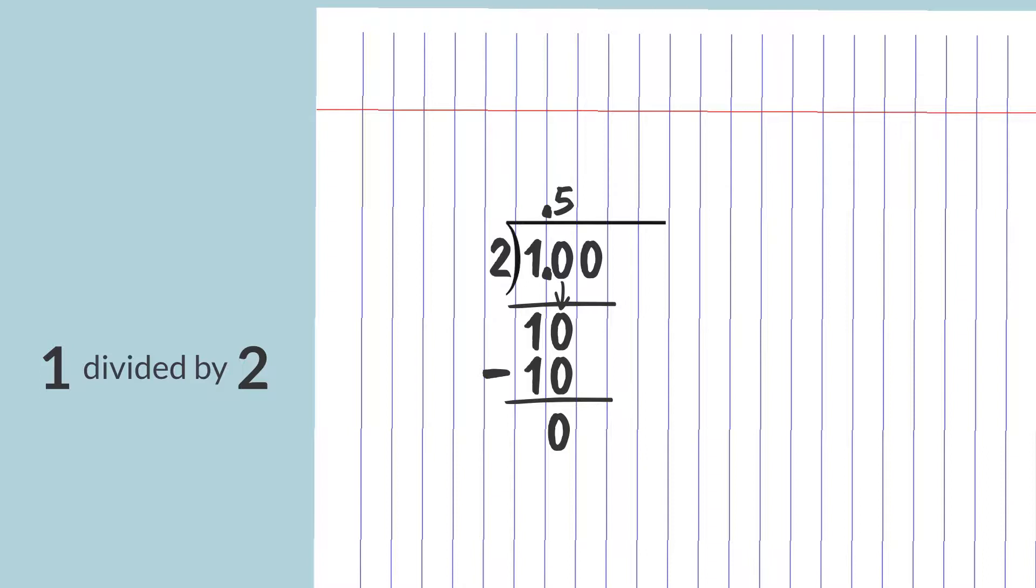If you want to find a percentage, keep going. Bring the second zero down. How many times does two go into zero? Zero. Now your quotient should read 0.50. Write this answer again in a space to the right of your division problem. Put your pencil on the decimal point and move it two spaces to the right. Now write a percent sign after the number. 0.50 equals 50 percent.